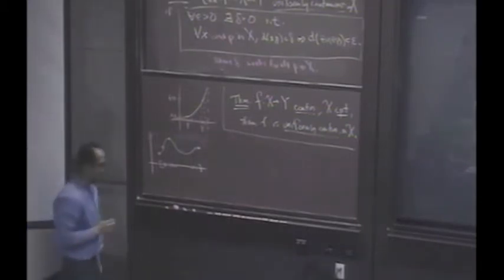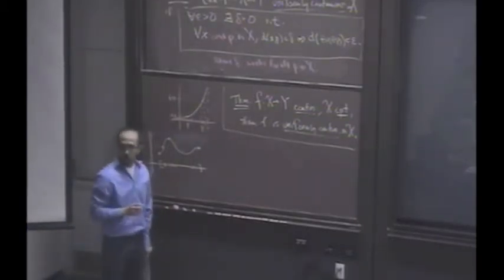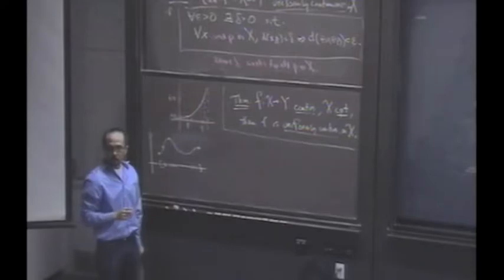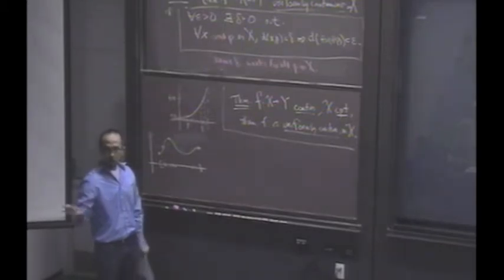Can you make a continuous function that maps each point to the distance? Like somehow make a function that maps the points to the distance because the distance is always in the real line. And then if you had a continuous function, then you could know that those values, the distances, those have a minimum and maximum. Okay, hold that thought.